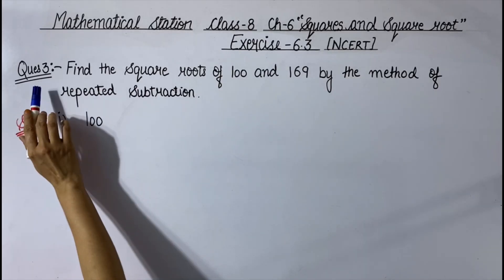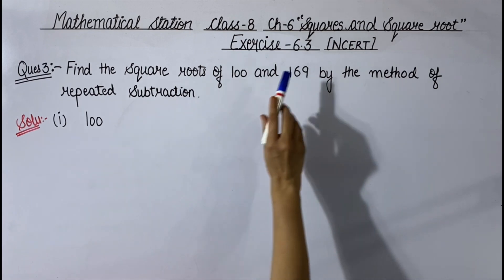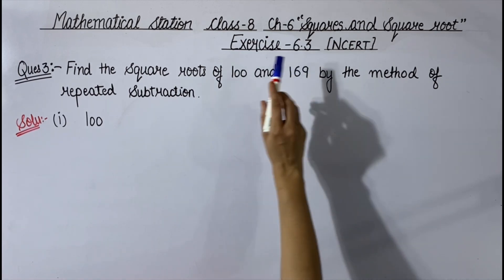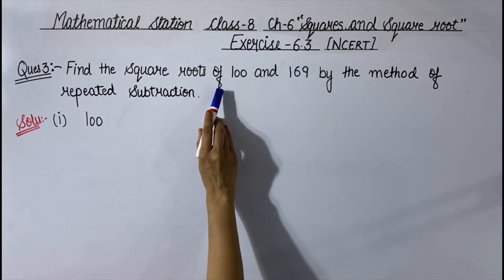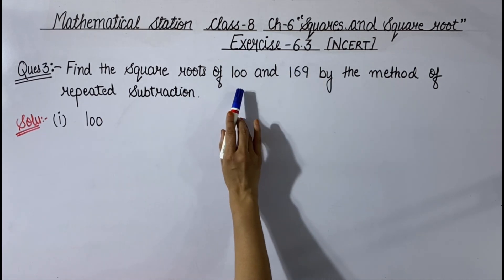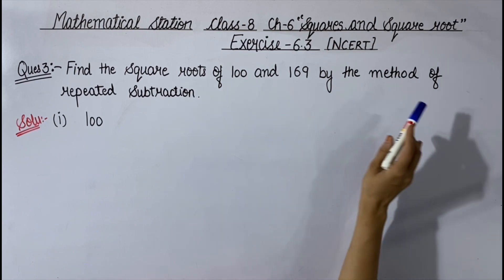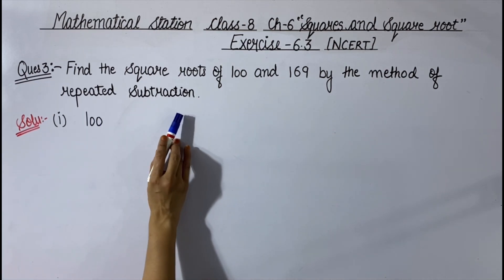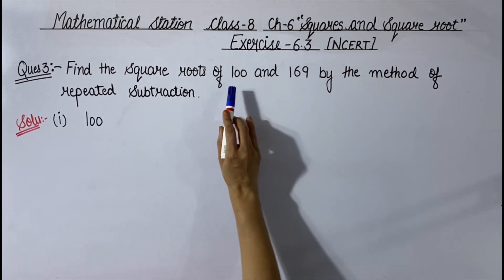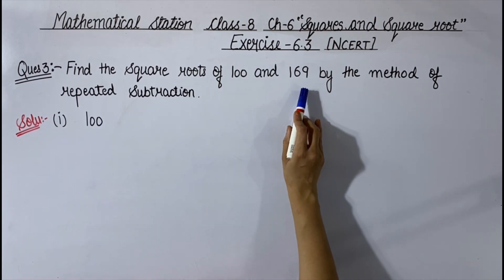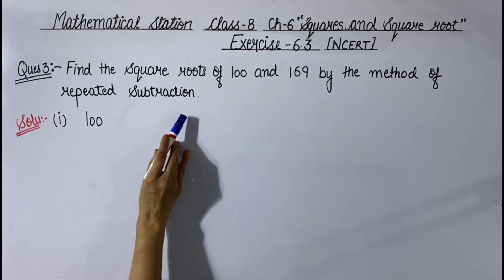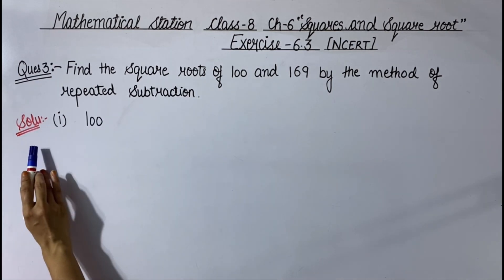Now the next is question number 3 from exercise 6.3. The question is: find the square roots of 100 and 169 by the method of repeated subtraction. We have to find the square root of 100 and 169 using the repeated subtraction method. Let's start the solution.